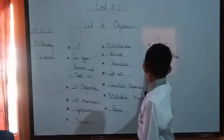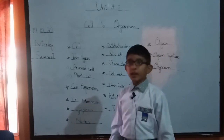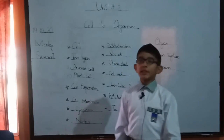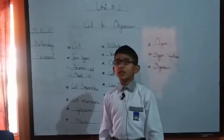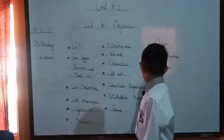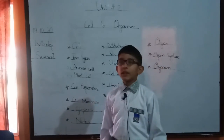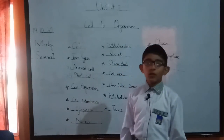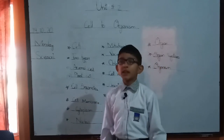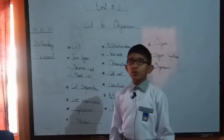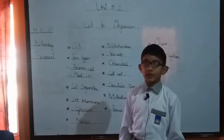Now I will tell you about organ system. A group of organs makes an organ system. For example, the alimentary system and nervous system. A group of organ systems makes an organism. For example, human, animal, etc.